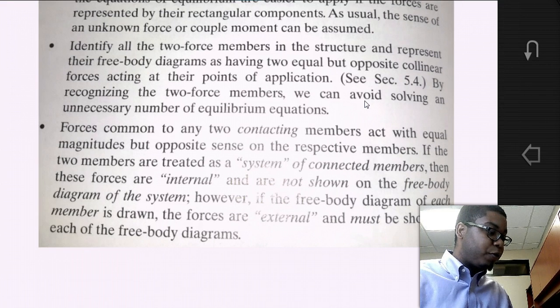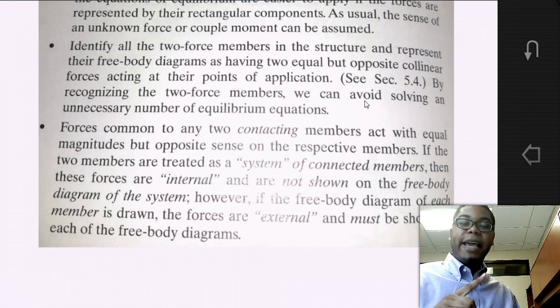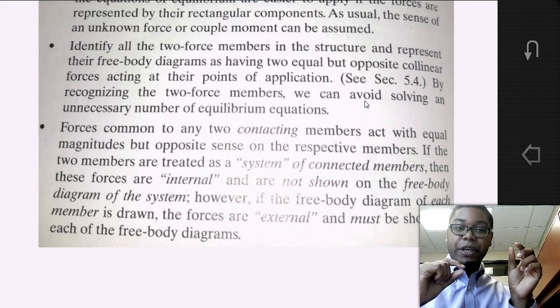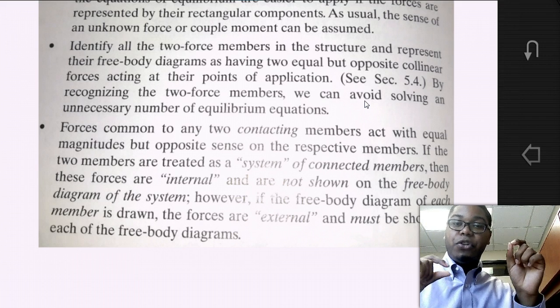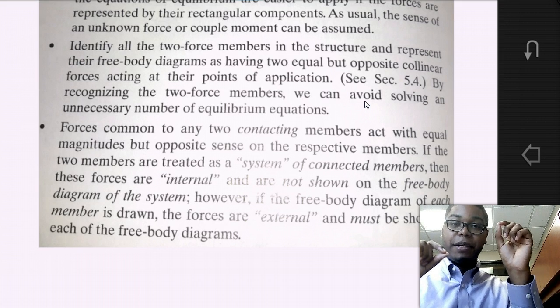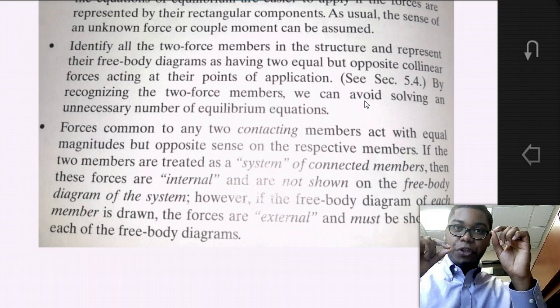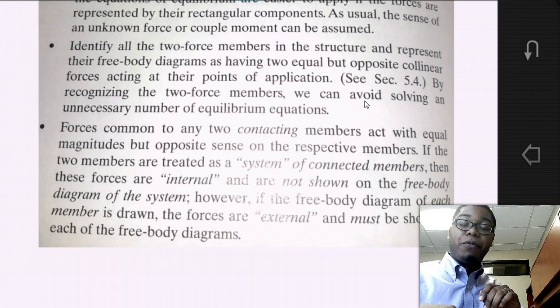The next thing, identify all the two force members that are in the structure and represent their free body diagrams as having two equal but opposite co-linear forces that are acting on their points of application. So, if we have a member and we can identify it as a two force member, then we can simplify it into two forces, one acting at each end of that two force member. And this is a really great way to reduce the number of unknowns that we have in a problem. Because we could decompose the two force member into four unknowns. An unknown at point A in the x and y, and an unknown at point B in the x and y. Or, if we are able to recognize that it's a two force member, we'll have it decomposed into only two forces that are equal and opposite and co-linear. So, that greatly simplifies the application in our equations of equilibrium and helps prevent us from having the problem where we have too many unknowns and not enough equations.